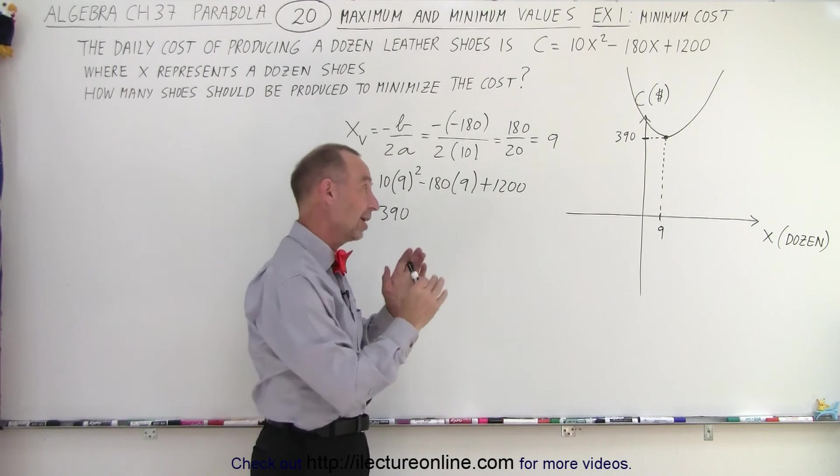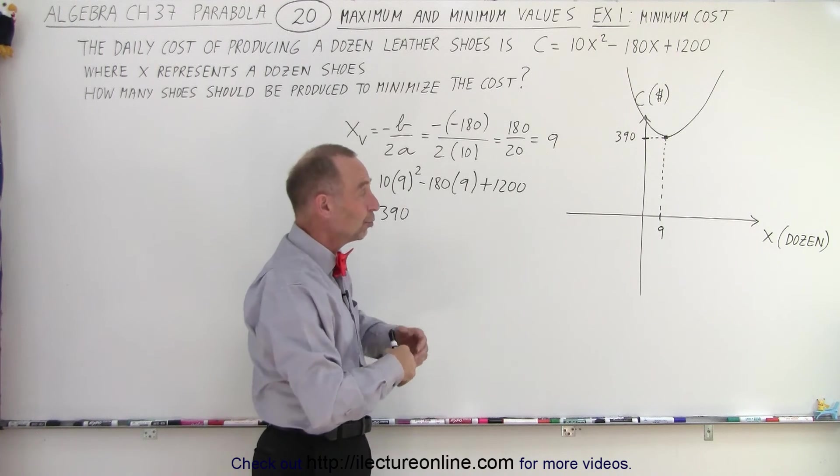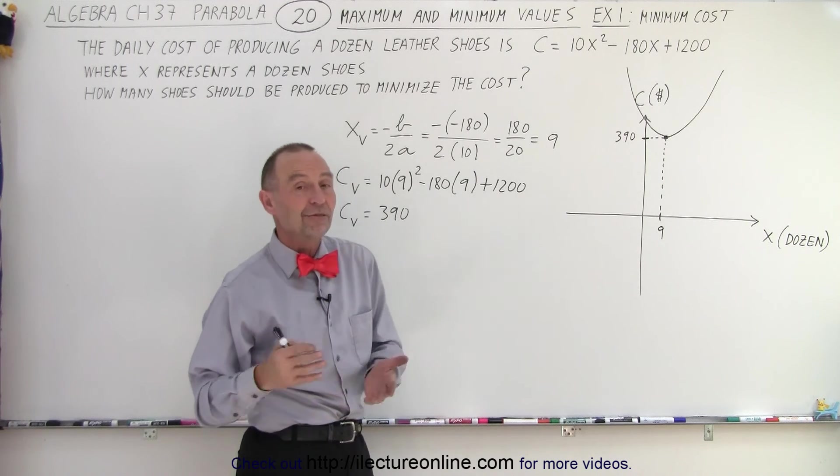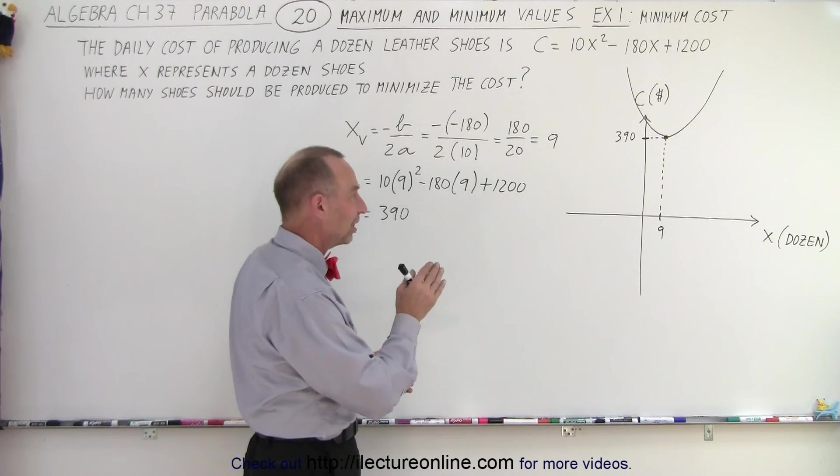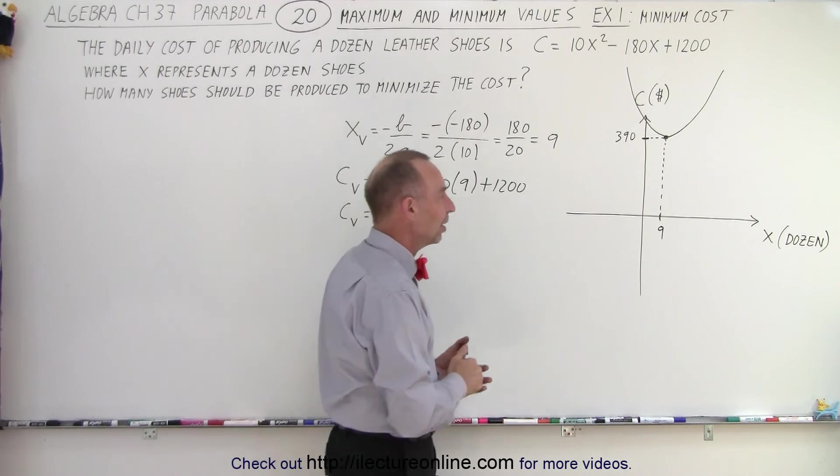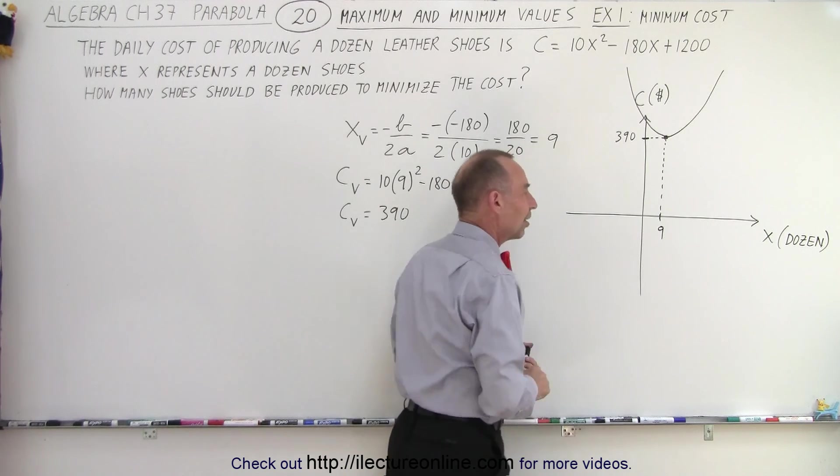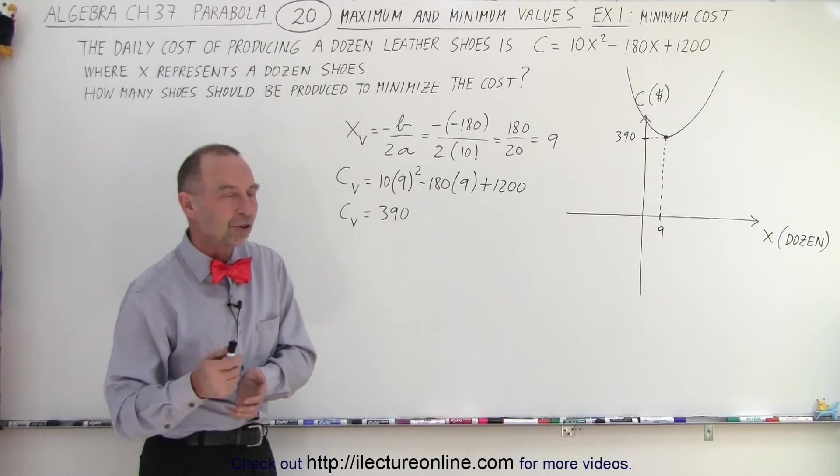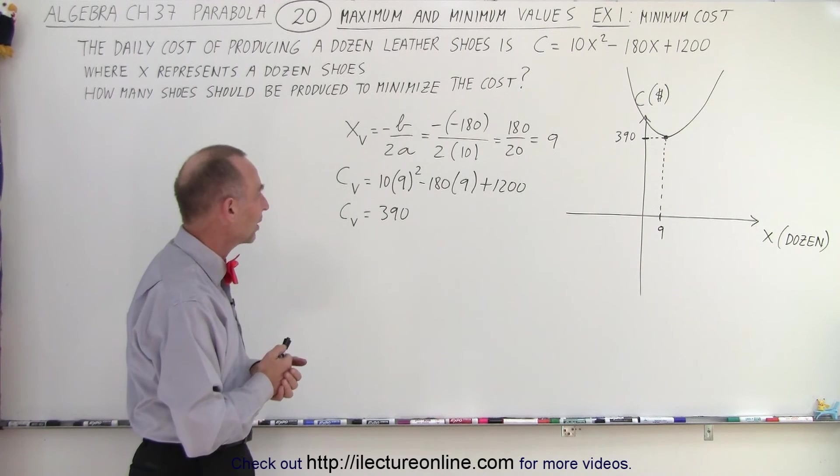So, if you want to minimize cost, you only produce 9 dozen shoes. If you want to produce more shoes, it'll cost you more. The cost will go up. That may be an advantage in other ways. But if it's strictly an issue of cost, 9 dozen is the cheapest cost associated with producing shoes. 9 dozen shoes will give you the cheapest or the least amount of cost.